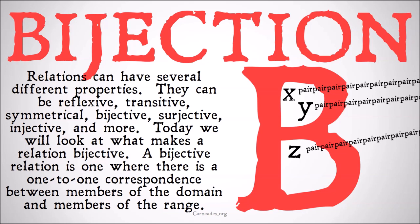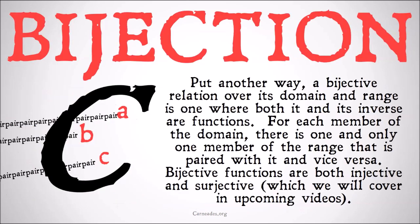A bijective relationship is one where there is a one-to-one correspondence between members of the domain and members of the range. A bijection relation over its domain and range is one where both it and its inverse are functions. For each member of the domain, there is one and only one member of the range that is paired with it, and vice versa — so each half of the beginning and the end of the function pair perfectly with each other.